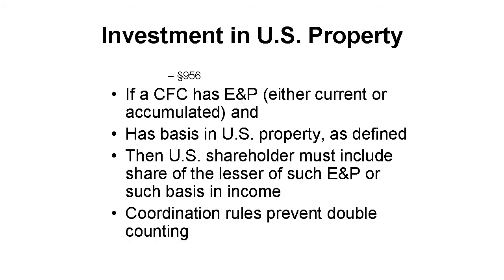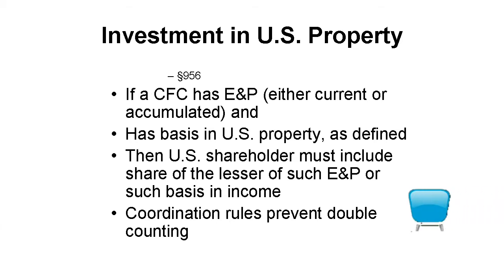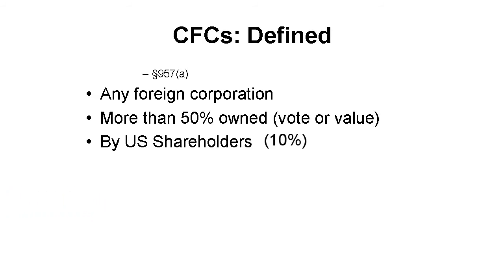For any part of Subpart F to apply, including Section 956, the corporation must be a controlled foreign corporation. Here's a link to the video covering the definition of CFC in more depth. Basically, a CFC is any foreign corporation more than 50% owned by U.S. persons who themselves are 10% or more owners. A U.S. person includes U.S. individuals, corporations organized in one of the 50 states or in D.C., and partnerships operating subject to U.S. law.